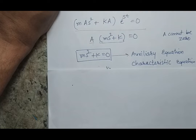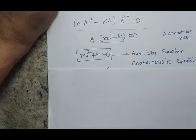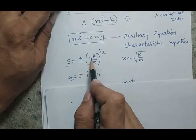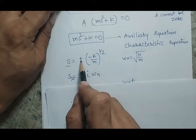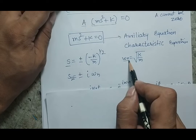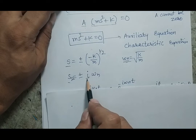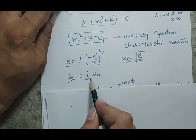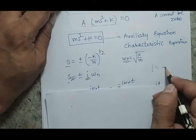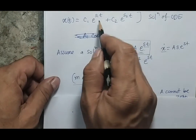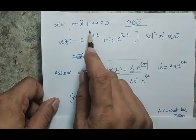Solving the characteristic equation ms² + k = 0 for s gives s = ±√(-k/m). Since k/m = ωₙ², we get s = ±iωₙ, where i is the imaginary unit representing √(-1). The roots s₁ and s₂ of the characteristic equation will provide further information about the solution.